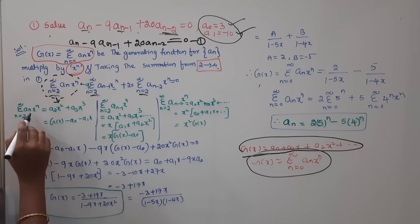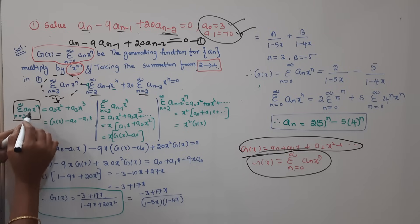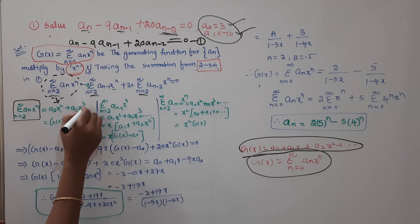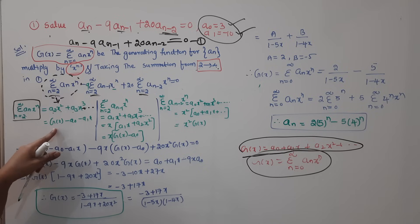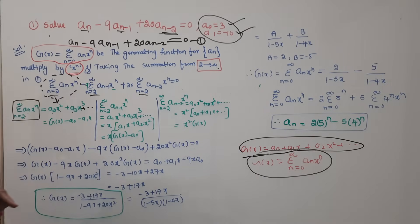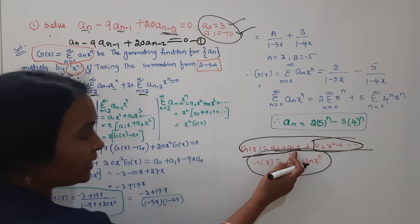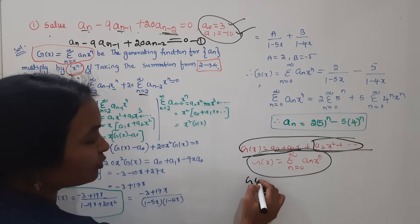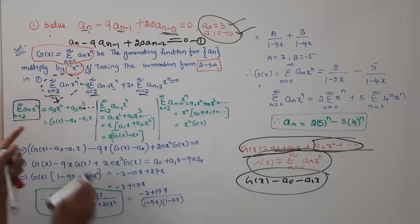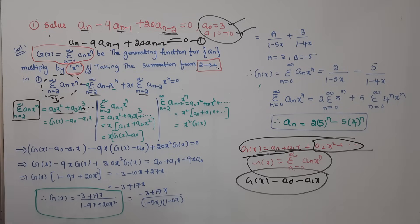For the first term, with n equals 2: a₂x², and so on. This equals the generating function minus a₀ minus a₁x. I will say the generating function minus a₀ minus a₁x², leaving these terms out.